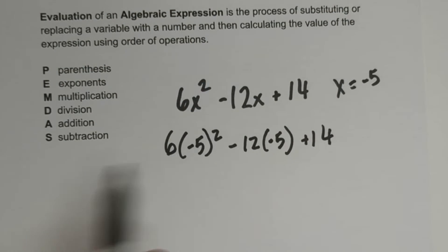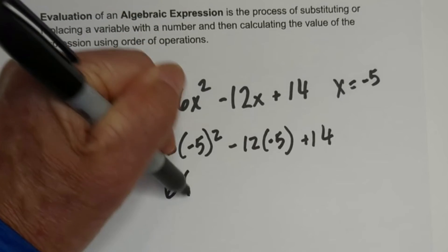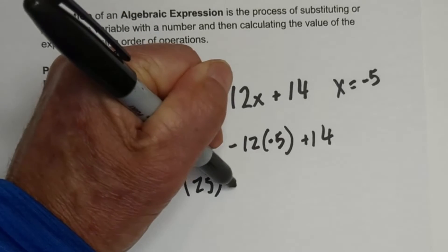Let's start with the exponent. So it's going to be 6 and negative 5 times negative 5 is 25, minus 12 times negative 5 plus 14.